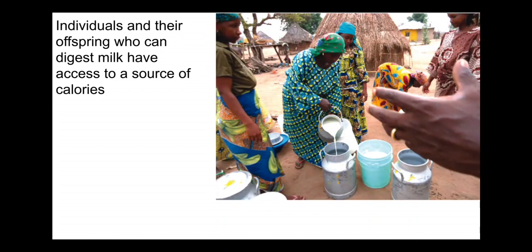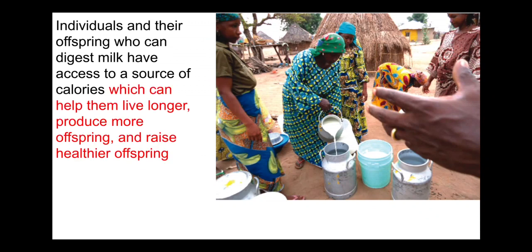We know that lactose tolerance has evolved. Individuals and their offspring who can digest milk have access to an important nutritional resource — a source of calories and nutrients — that allows them to maybe live longer, produce more offspring, or raise healthier offspring. They may recover from sickness faster than those who can't digest lactose. If you can't digest lactose and you drink it, you get sick.